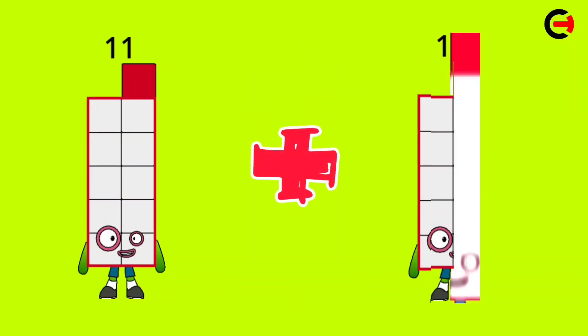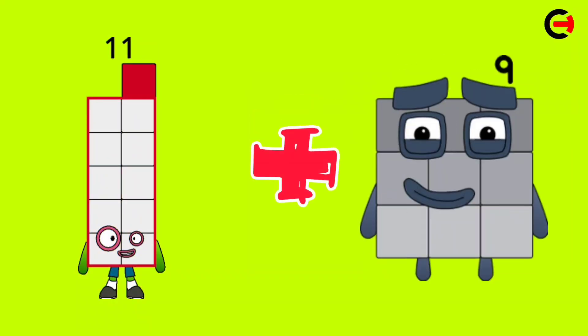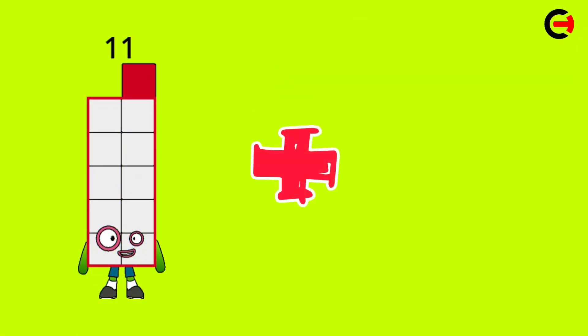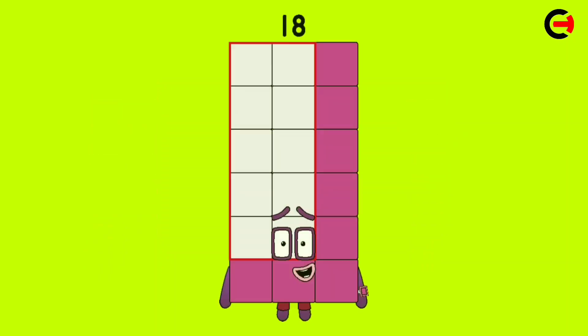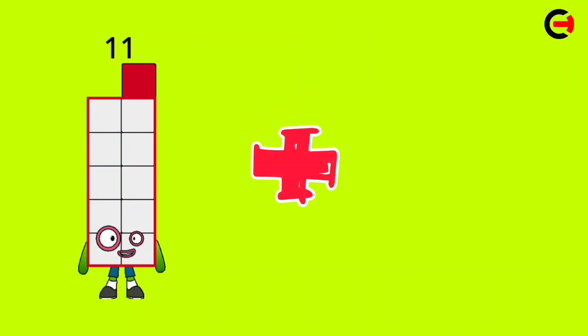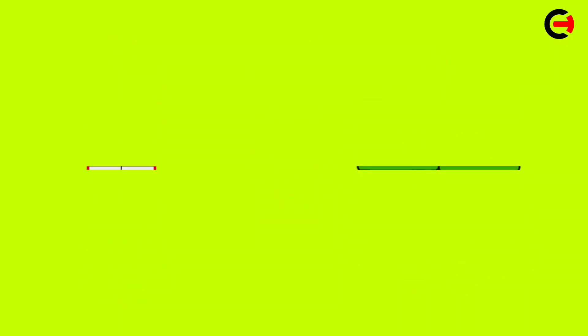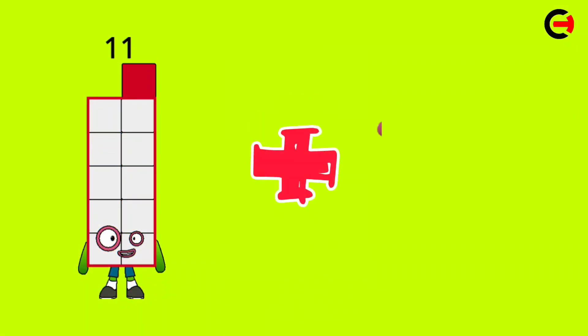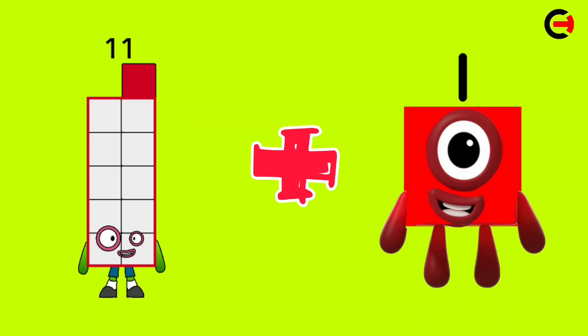11 plus 11 is equal 22, 11 plus 10 is equal 21, 11 plus 9 is equal 20, 11 plus 8 is equal 19, 11 plus 7 is equal 18, 11 plus 6 is equal 17, 11 plus 5 is equal 16, 11 plus 4 is equal 15, 11 plus 3 is equal 14, 11 plus 2 is equal 13, 11 plus 1 is equal 12.